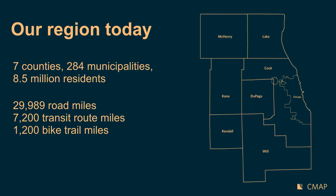Our region today: we work in the seven-county region where Chicago is just one of 284 municipalities, with 8.5 million residents. As far as transportation assets, we have about 30,000 miles of road, 7,200 miles of transit routes, and 1,200 bike trail miles — a lot of assets to operate and maintain, operated by many different entities. Frankly, our assets are aging, and as they age it becomes more expensive to operate and maintain them, creating barriers for residents throughout the region.